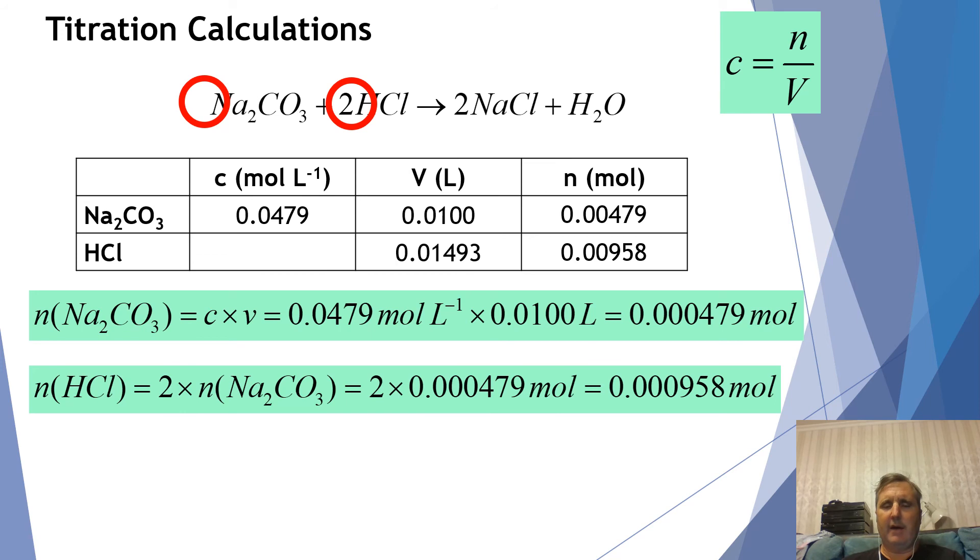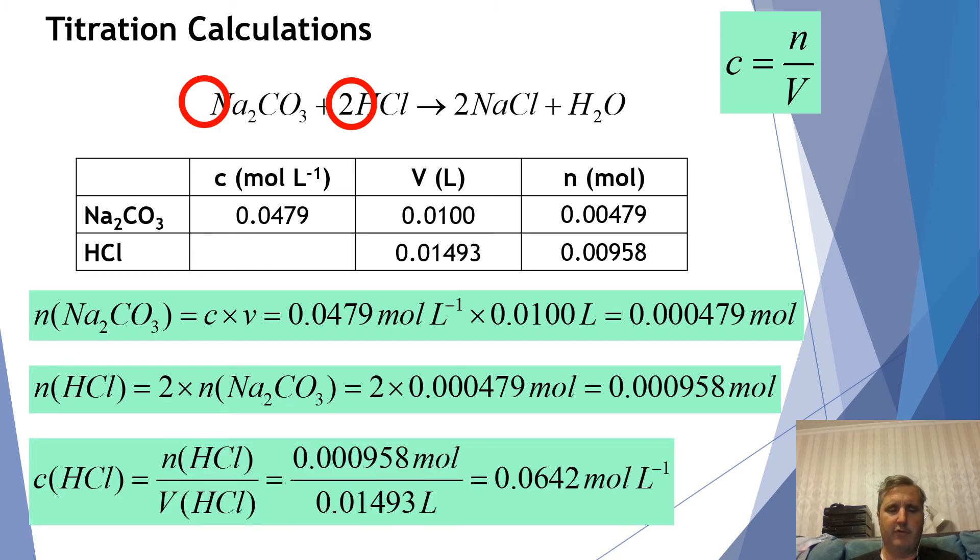So we've put down the volume from our titer in here and the volume is 14 point 93 milliliters which is 0.01493. And I now know the volume of my hydrochloric acid and the moles of my hydrochloric acid so I can find the concentration and that's what I wanted to do. Hydrochloric acid was my unknown solution, I didn't know its concentration accurately. I had an idea because I was told at the start of the experiment, so now I can find it accurately by dividing. The concentration is going to equal the moles of hydrochloric acid divided by the volume of hydrochloric acid.